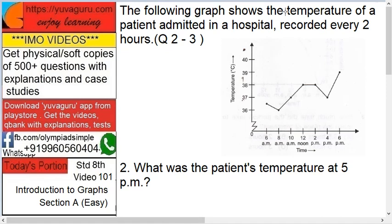The following graph shows the temperature of a patient admitted in a hospital, recorded every two hours. The time axis starts from 6 a.m. to 6 p.m.